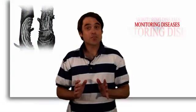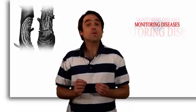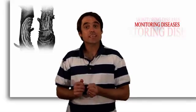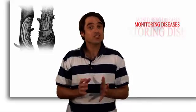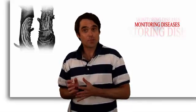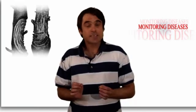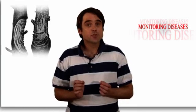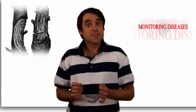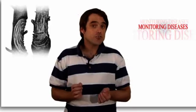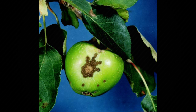At certain times of the year the farmer will be on the lookout for diseases that can affect his trees and crop. There are two main diseases that can affect deciduous fruit. These are apple scab and powdery mildew.